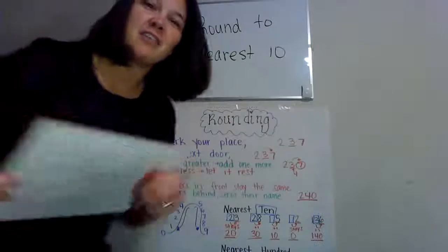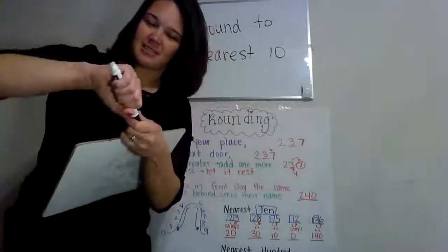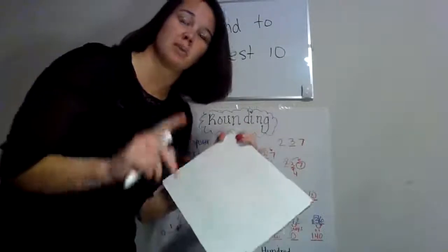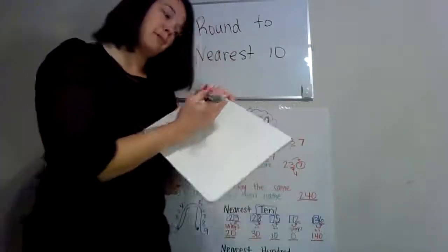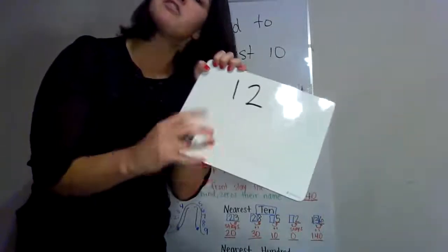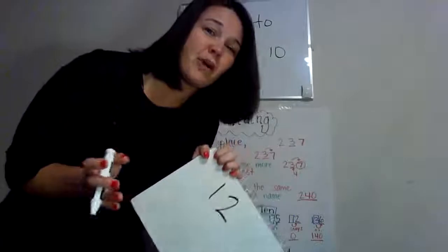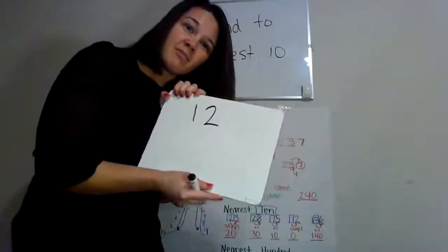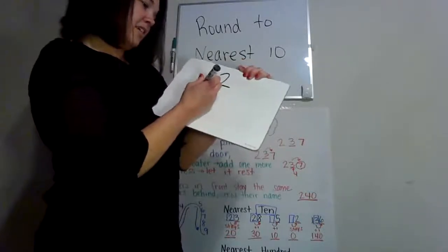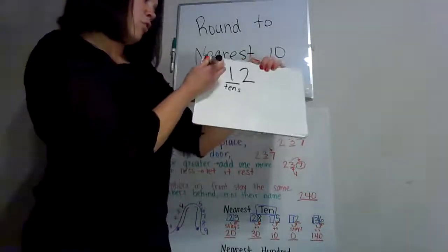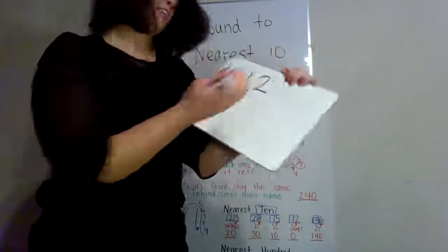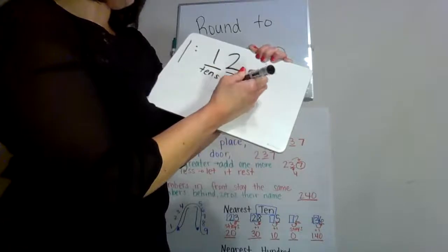So when we round to the nearest tens place, first of all, we have to determine which number is in the tens place. If I have the number 12, there are two numbers. Which one is in the tens place? Yes, the one is in the tens place. The number 12 has one ten and two ones.